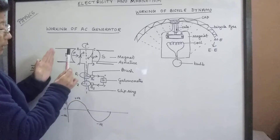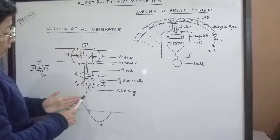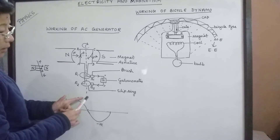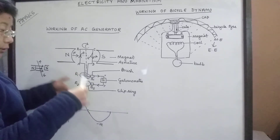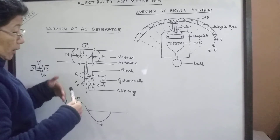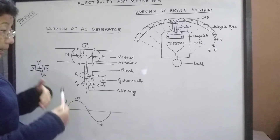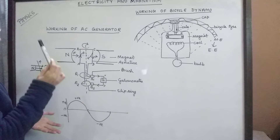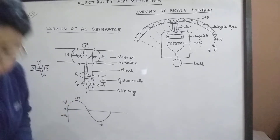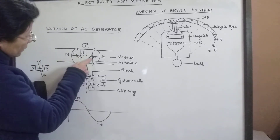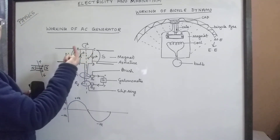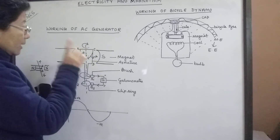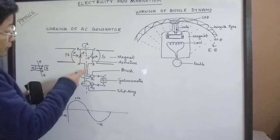The armature rotates around an axle. Let this be the initial position of the armature — it starts rotating. While the armature is in this position, a maximum number of lines of force will be passing through it, so that is maximum flux. As it rotates, this side of the armature and the other side are cutting lines of force in a perpendicular manner, causing a change in magnetic flux. Magnetic flux will alternate between maximum and minimum continuously, and that induces current in the circuit.